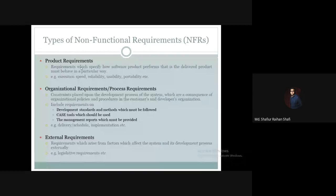Product requirements specify how the software product must behave — the delivered product must behave in a particular way. Requirements that are directly related to the quality of the product are called product requirements.